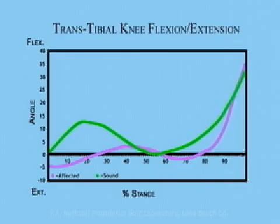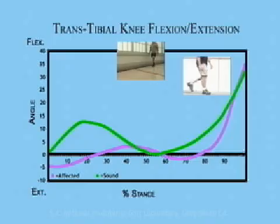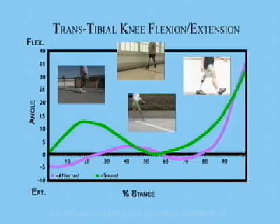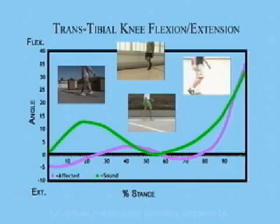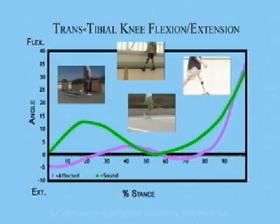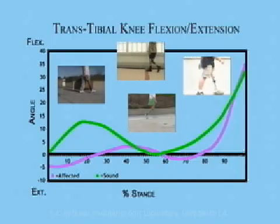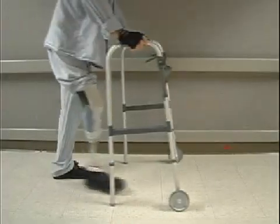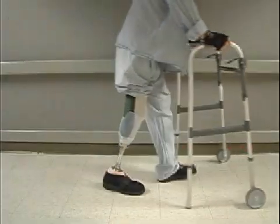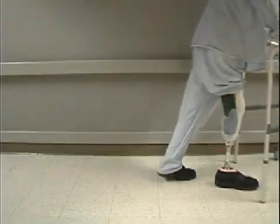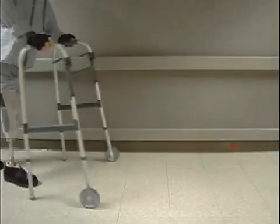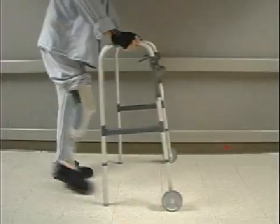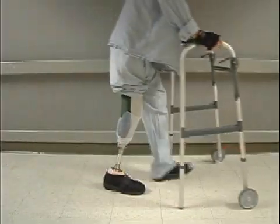This reduced knee flexion is seen in nearly all persons with a transtibial amputation. Reduced knee flexion is even greater in individuals with general muscle weakness, often a characteristic of dysvascular amputees.